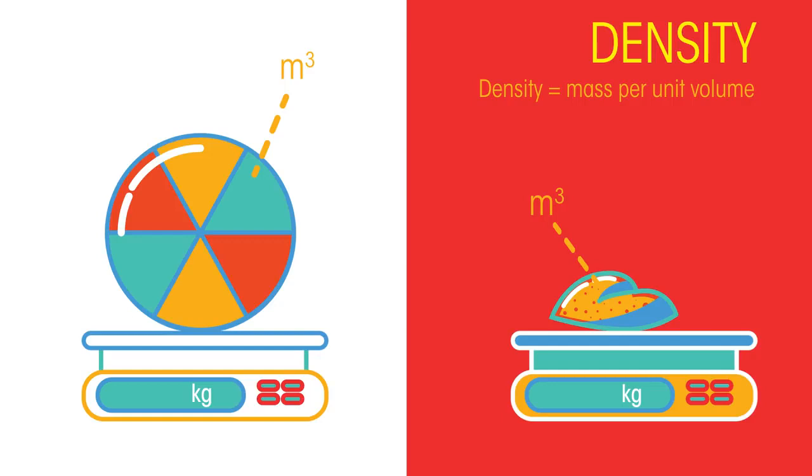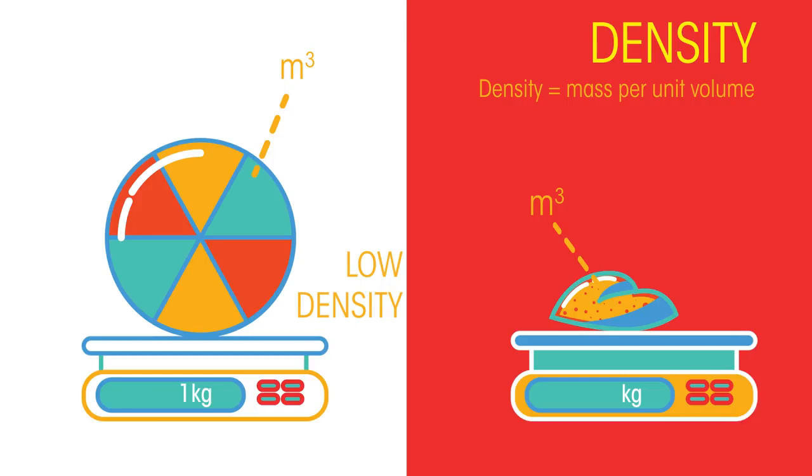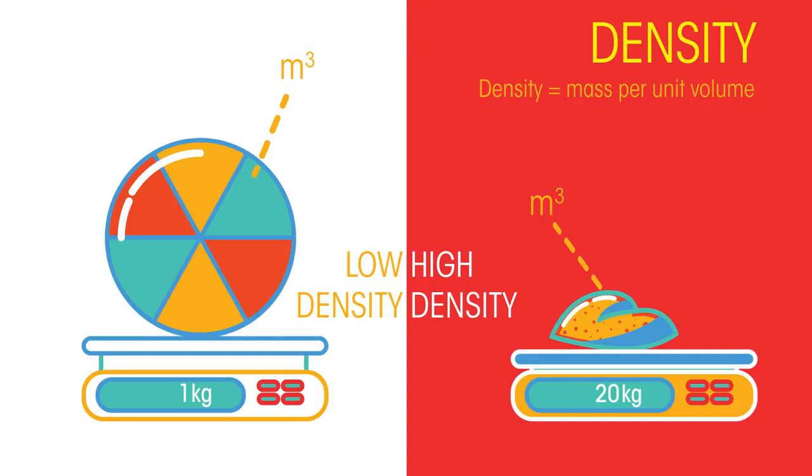So the big beach ball has a small mass but a big volume, meaning its density is very low, whereas the pebble is the opposite: lots of mass compacted into a small volume.